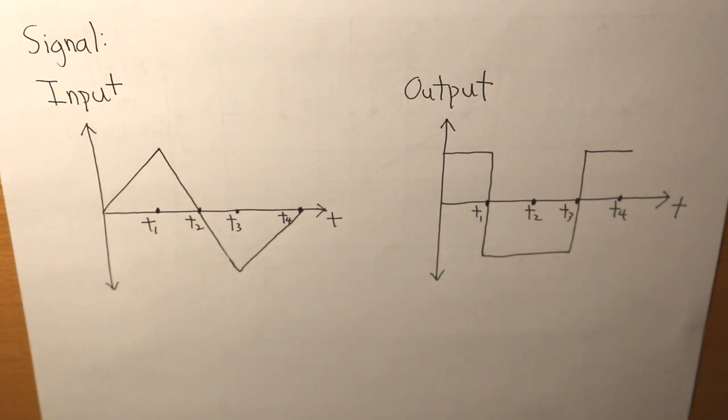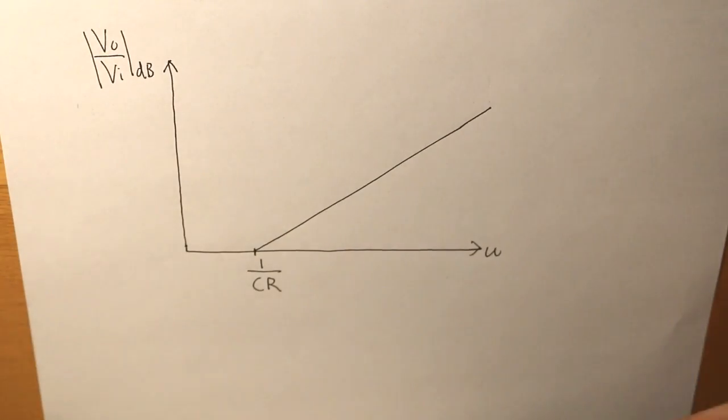And then from T1 to T3, it's going to give us a negative flat line because our input signal is decreasing linearly, and vice versa consequently.